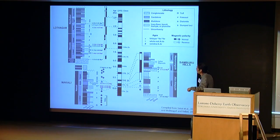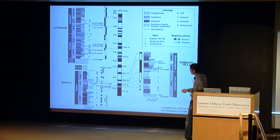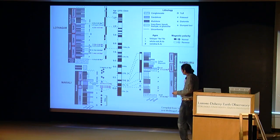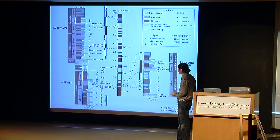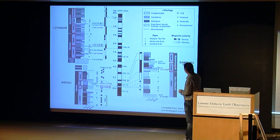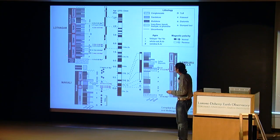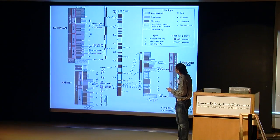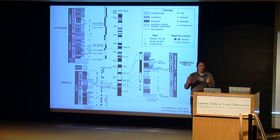This is the stratigraphy of the three different areas. The important thing to take away is the ages in red. In Nakali, we use an age of 9.9 million years. The fauna comes from the upper member of the Nakali formation. Moving to the Samburu Hills, the fauna comes from the Namurungule formation, dated at 9.6 in the lower member and about 9.3 for the upper member. Then Lothugum has a much longer record spanning from 7.4 to about 3.2 million years.